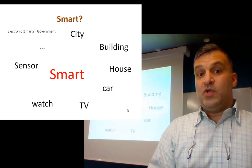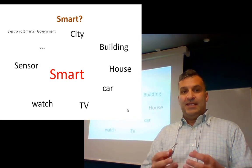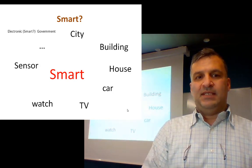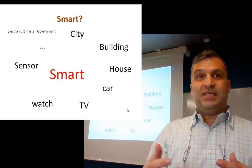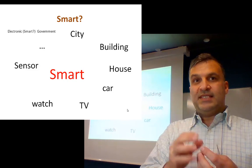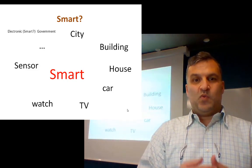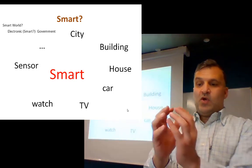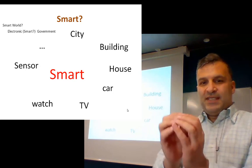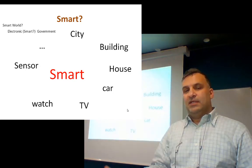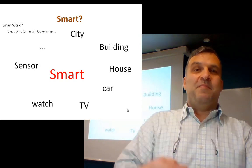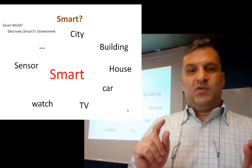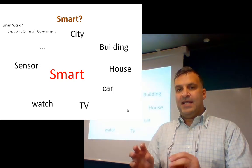We talk about electronic government — does the meaning of electronic government match with smart government? We don't use that term a lot, but we use 'smart city.' It is a question related to advertising. For this reason, we should discover what is behind this smartness — what do we mean exactly by smart car, by smart house, by smart sensor? Why don't we talk about a 'smart word'? Because there is no one who will buy a system called that. It is a question of media.